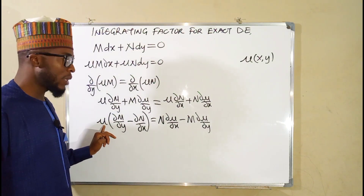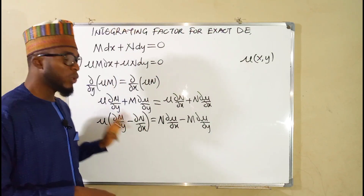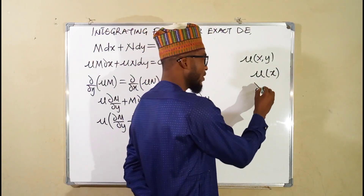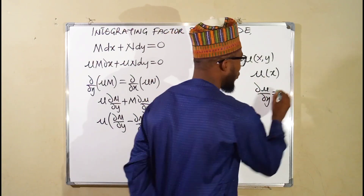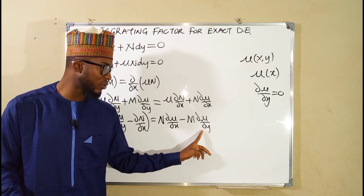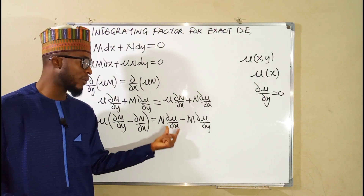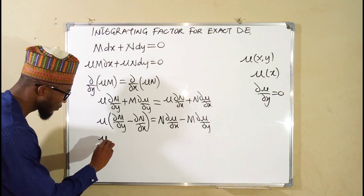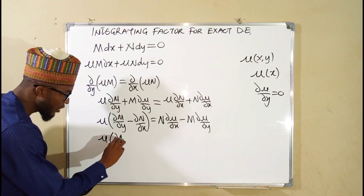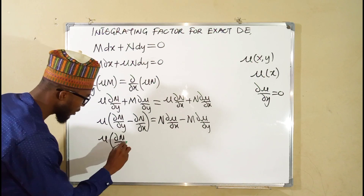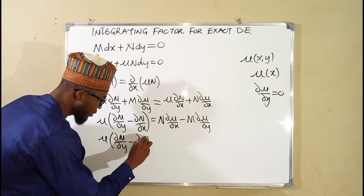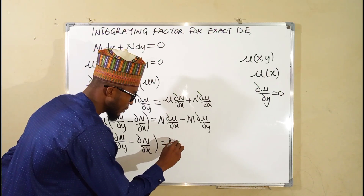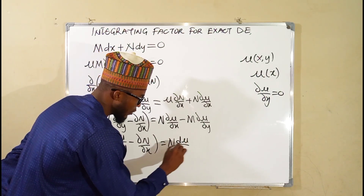Our main target is to solve for mu, but solving for mu here will be a little bit difficult. So we pretend that our integrating factor is only in terms of x. If this is true, the partial derivative of mu with respect to y must equal 0, so the whole term involving it becomes 0. The partial derivative of mu with respect to x then becomes an ordinary derivative, since mu is not an implicit function. So we get mu times (partial M / partial y) minus (partial N / partial x) equals N times d·mu/dx.